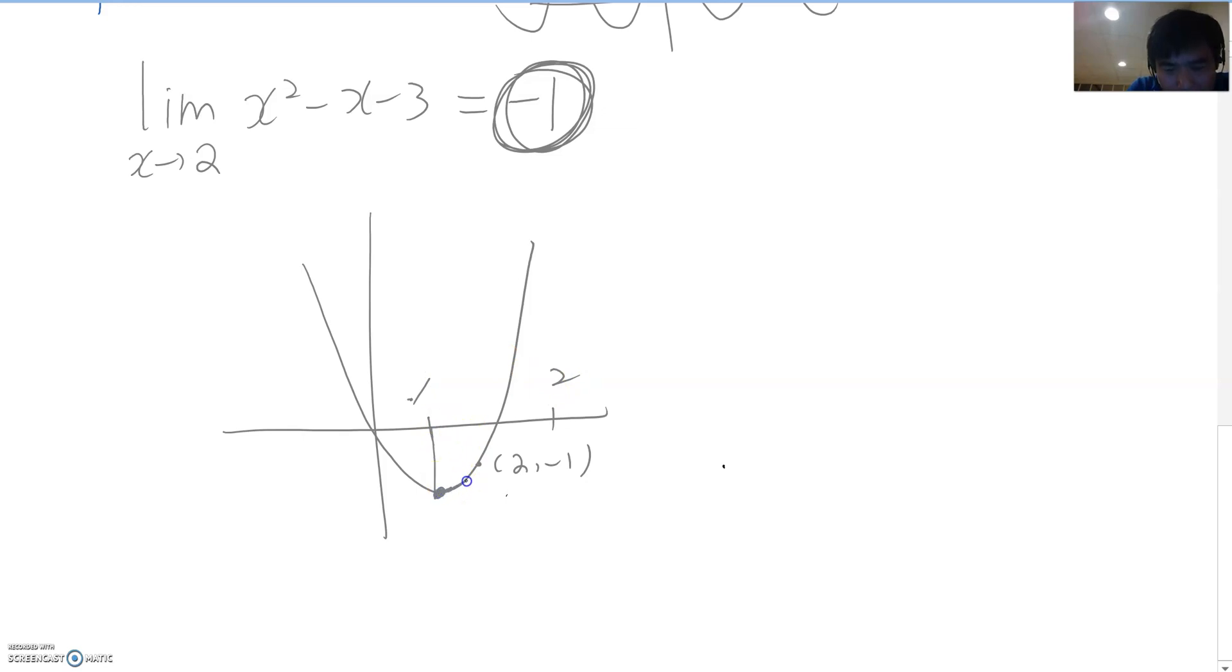Then this point on the graph moving toward that two here so on the graph which means y value therefore so this y value moving toward that this coordinate.